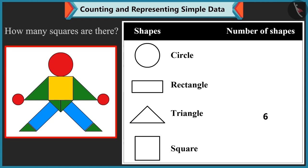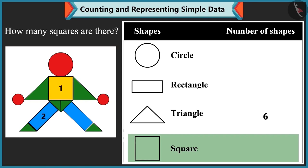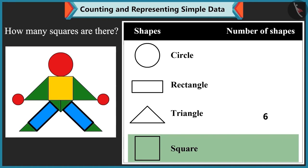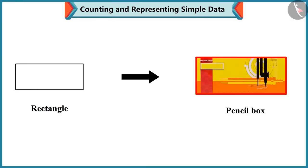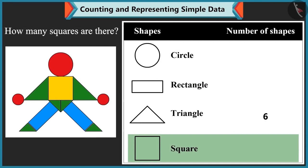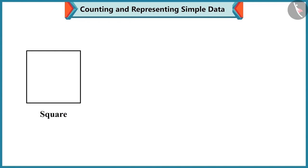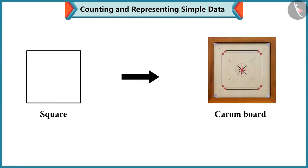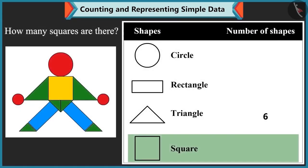Mummy asks how many squares there are. Bubbly initially miscounts, thinking rectangles are squares. Mummy corrects her: there is only one square, which is like a carom board, while the rectangle is like a pencil box. Bubbly understands and confirms there is just one square.